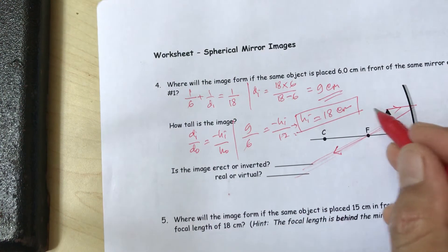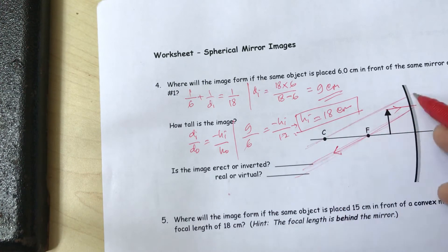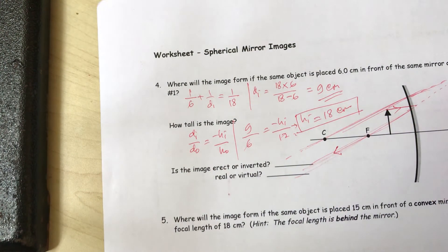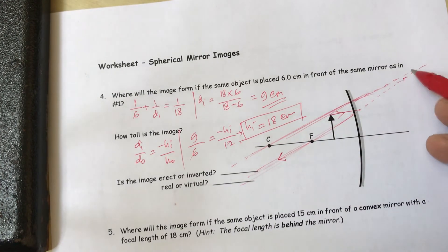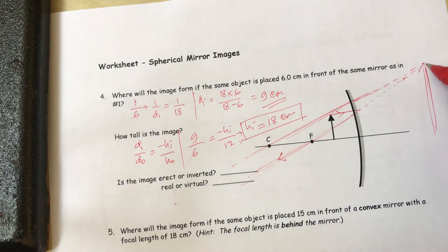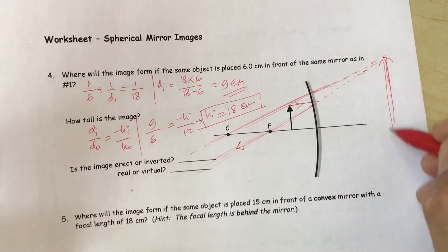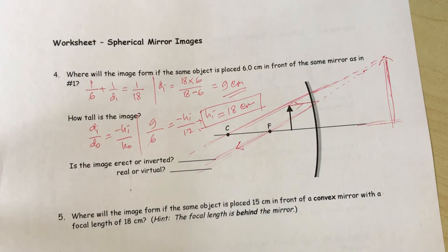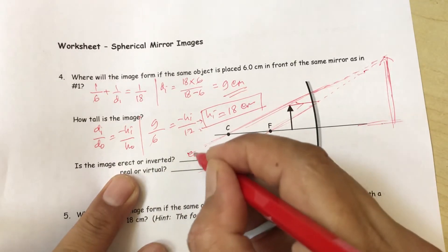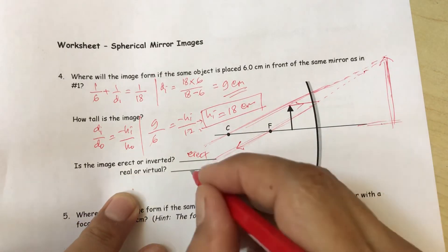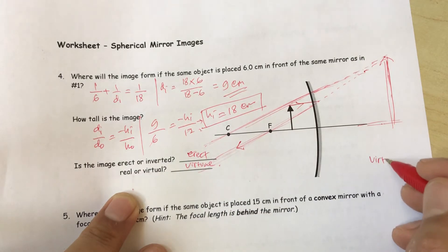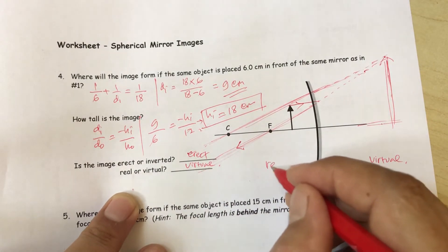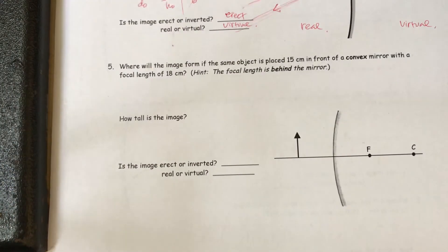We draw the ray through the focal length and use the second ray line. The intersection is behind the mirror, so the image is very large — taller than the object. The image is erect and virtual, because the intersection is on the virtual side.